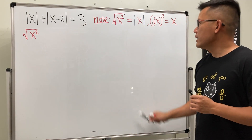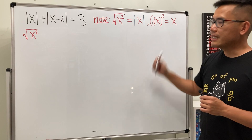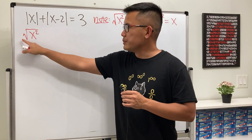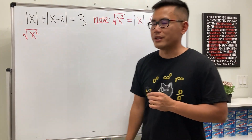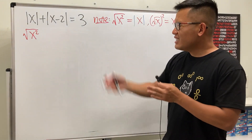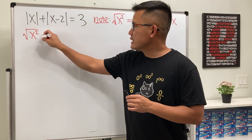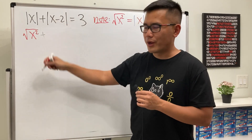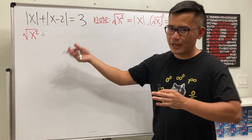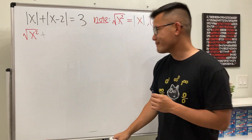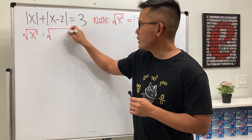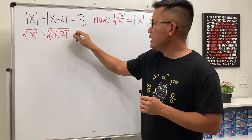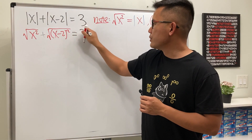Be careful with these two cases. For |x|, it must be written as √(x²). We do the same for the other absolute value: |x − 2| becomes √((x − 2)²), and this equals 3.